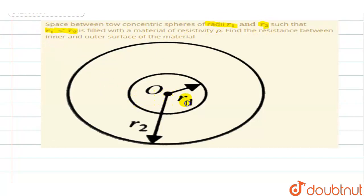See, this is R1 distance, this is R2 distance. You can easily see that R1 is less than R2. It is filled with a material of resistivity rho.